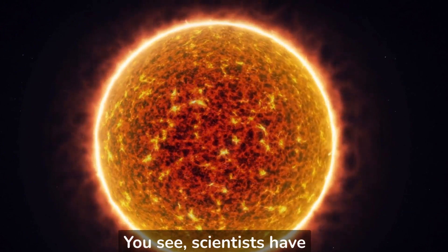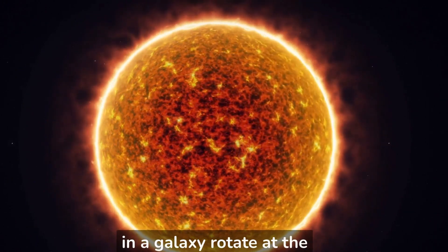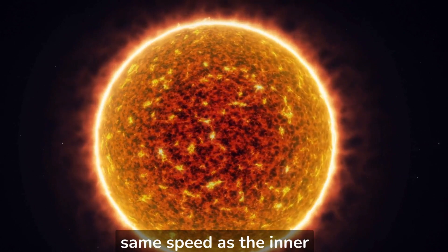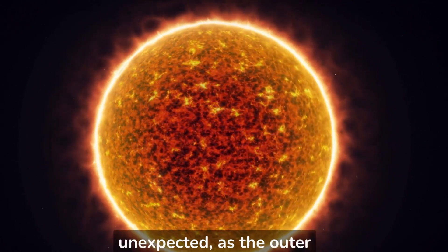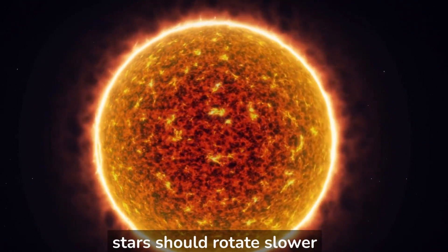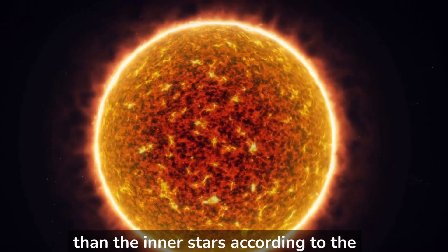Scientists have observed that the outer stars in a galaxy rotate at the same speed as the inner stars. This is unexpected, as the outer stars should rotate slower than the inner stars according to the laws of physics.